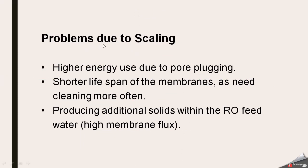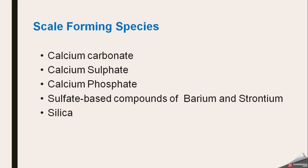Problems that arise due to scaling include: number one, higher energy use due to pore plugging — we need more energy for water to pass through plugged pores; number two, shorter membrane lifespan as it needs cleaning more often; and number three, producing additional solids within the RO feed water due to high membrane flux. Some famous scale-forming species are calcium carbonate, calcium sulfate, calcium phosphate, sulfate-based compounds with barium and strontium, and silica.